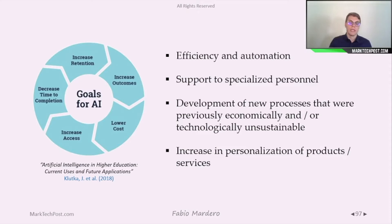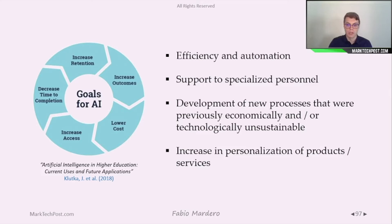The goals of AI used inside a company could be, for example, efficiency and automation — what we have seen as Industry 4.0. We can support specialized personnel, develop new processes, services, or products that were previously economically or technologically unsustainable, or increase personalization and customization of products and services. All of these goals can be achieved thanks to machine learning implemented in the company.